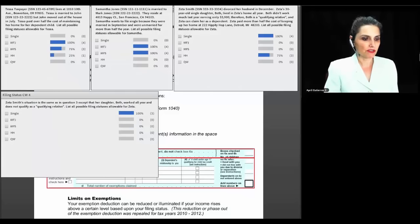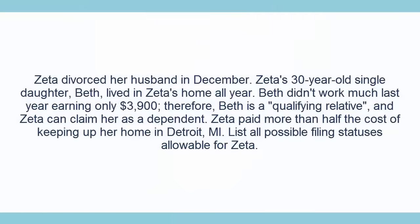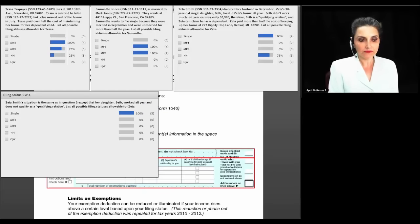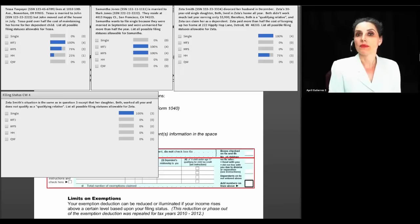Question three: Zetta Smith divorced her husband in December, and her 30-year-old single daughter Beth lived in Zetta's home all year. Beth earned only $3,900, so she qualifies as a qualifying relative and Zetta can claim her as a dependent. Zetta paid more than half the cost of keeping up her home. List all possible filing statuses for Zetta. Single is correct, but actually head of household is an option as well — her 30-year-old daughter can qualify Zetta for head of household because she meets the test for being a qualifying relative. We'll be getting into the qualifying relative and qualifying child tests shortly.